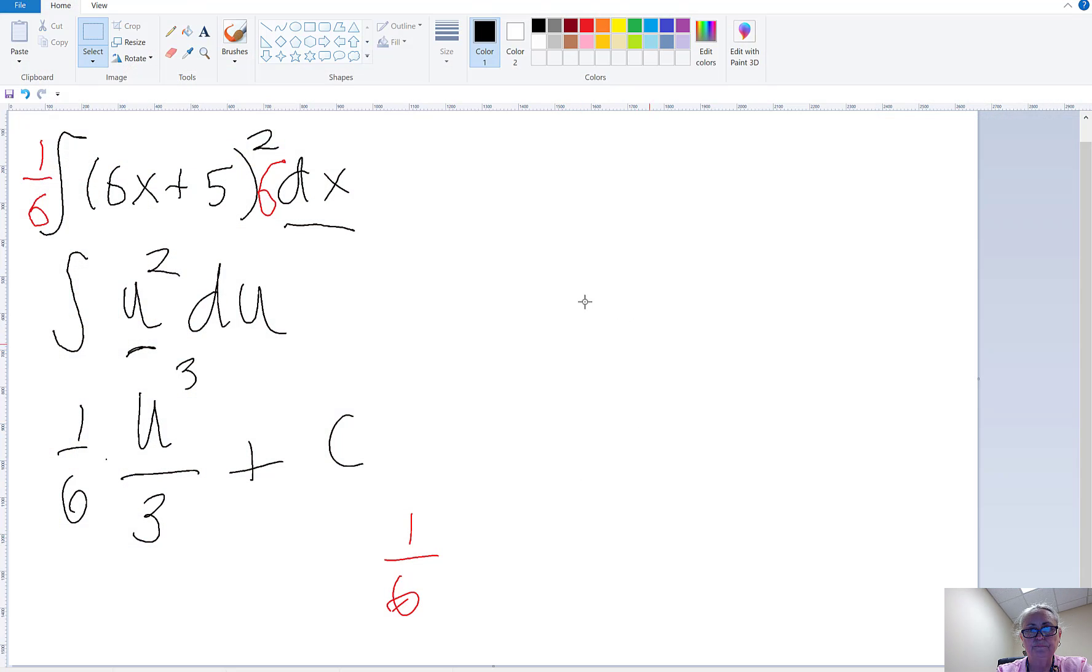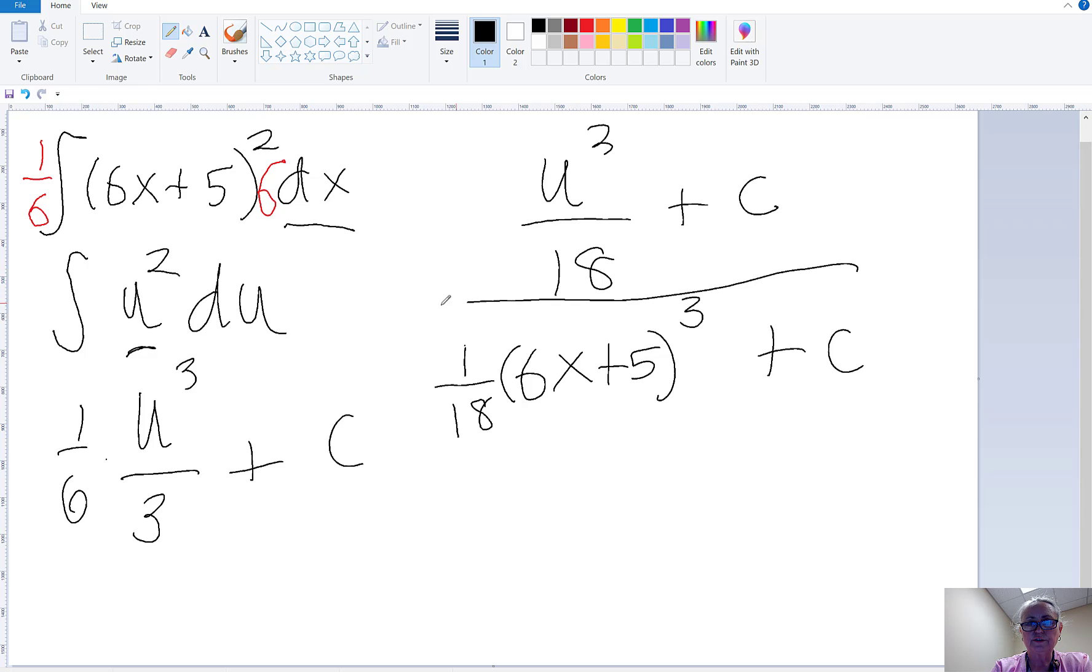Let's clean that up a little bit, and then we will check it by taking the derivative of it. So look, we've got u to the 3rd over 18 plus c, where u was 6x + 5, so it's (6x + 5) to the 3rd, and let's just put a 1/18 out here. You can write it all over 18, it's the same thing. There's our answer. 1/18 times (6x + 5) to the 3rd plus c.